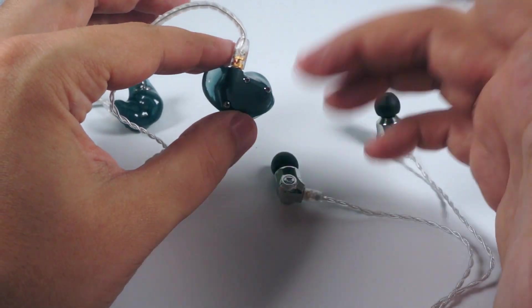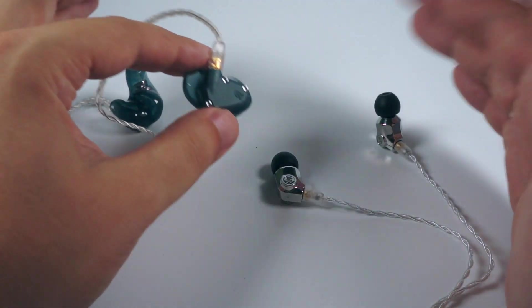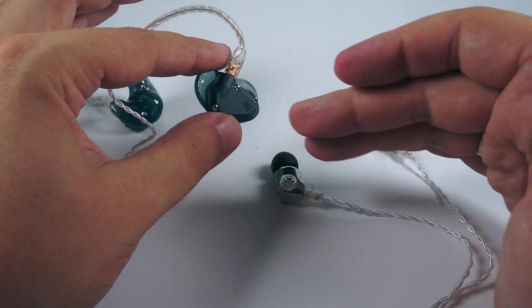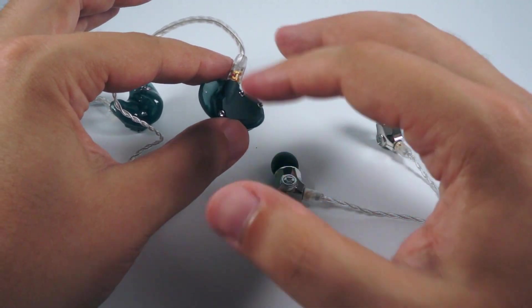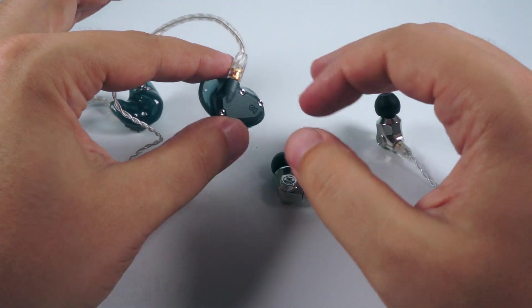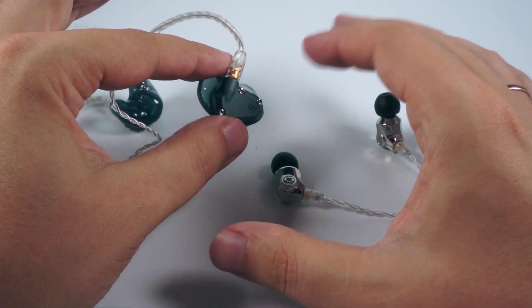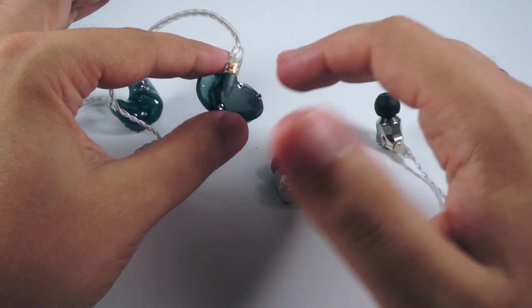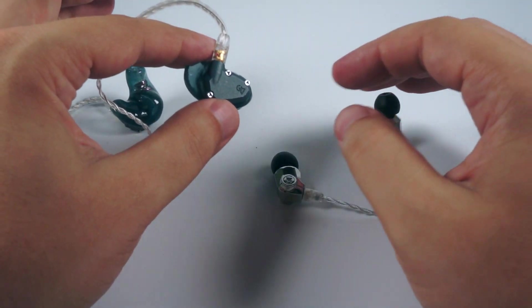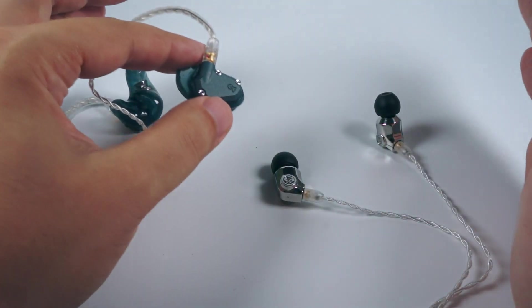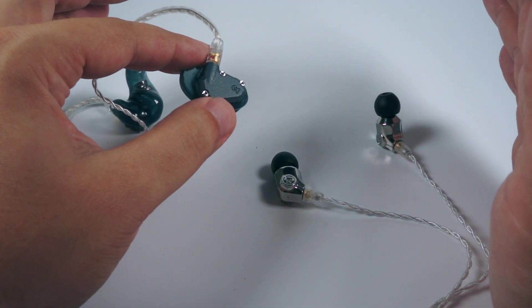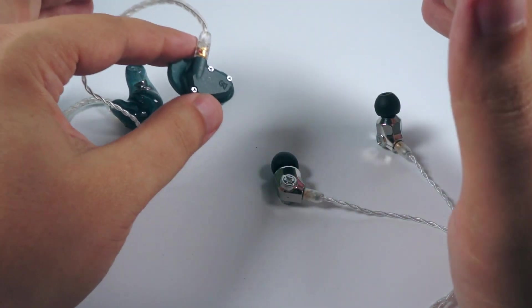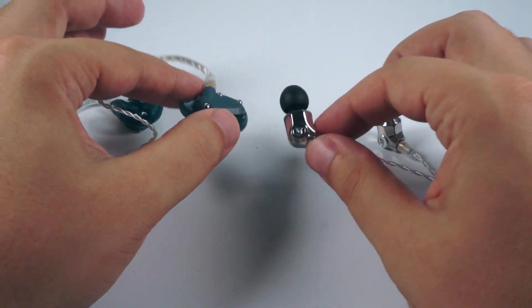They are really super detailed as you can probably expect from balanced armatures, with natural uncolored mids, with extended treble, and with tight punchy but actually a bit drier armature lower frequencies. They have big three-dimensional sound stage with probably smaller instruments than in Atlas.